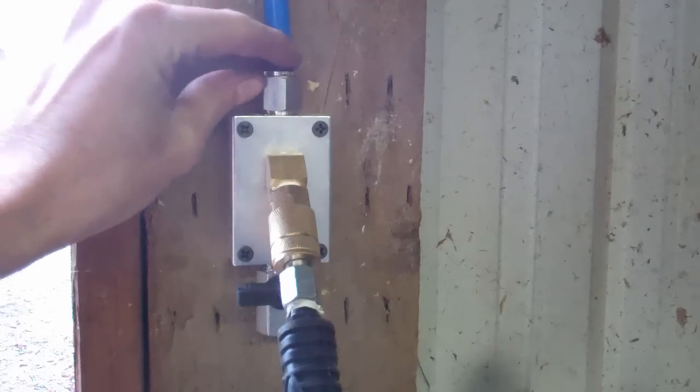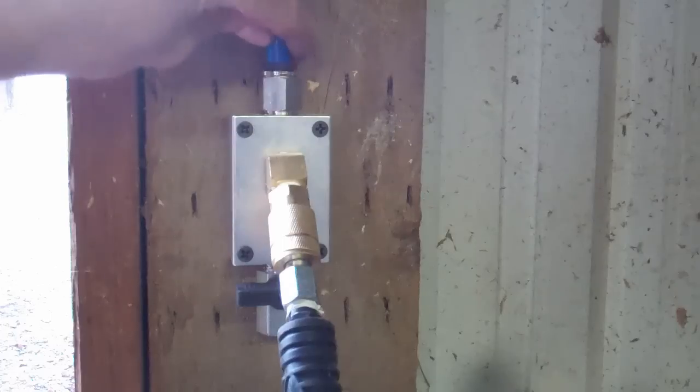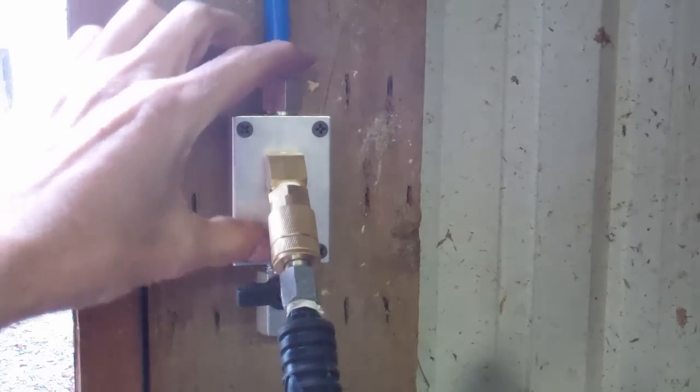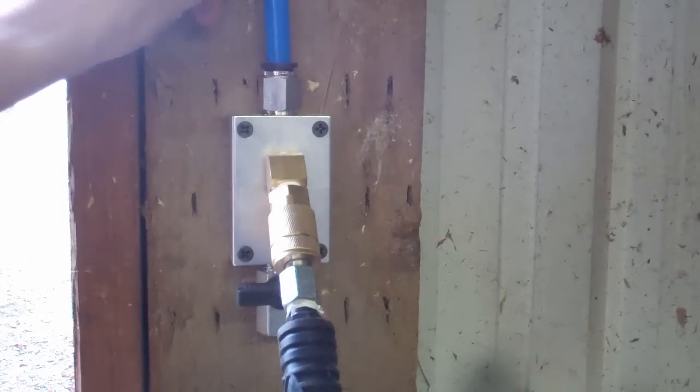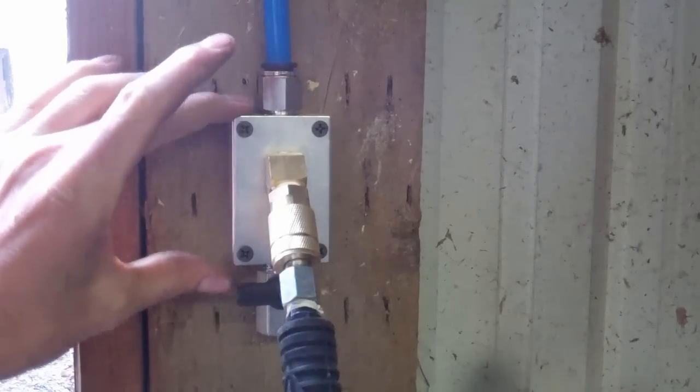The nice thing about these fittings, which I'll demonstrate in a minute, is you can reuse them. So you can snap the line into them. By compressing this black ring, you can take the line back out, which is really handy if you're in a situation where you may not be in your shop permanently. You can make the investment in the system and then you can take it with you and reinstall it.